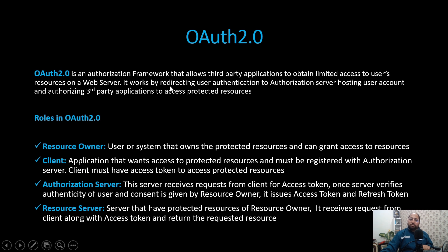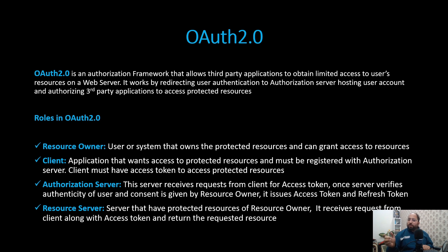As soon as the client tries to access the resource, it will be redirected to the authorization server to get the access token. Once the server verifies the authenticity of the user and consent is given by the resource owner, it issues an access token as well as a refresh token. Now we can use this token to access the resources. The resources will be available on the resource server — the server that has the protected resources of the resource owner. Using the access token received from the authorization server, we can now access the protected resources.